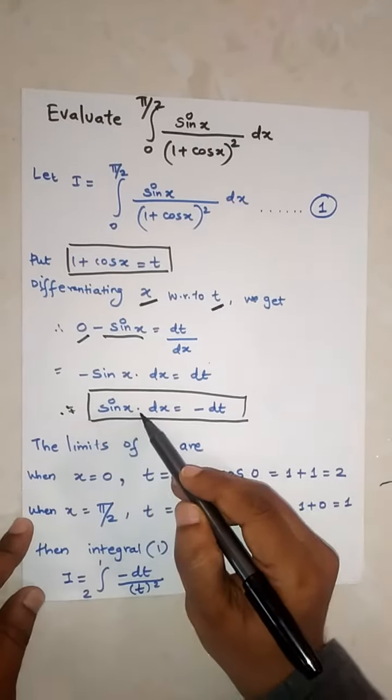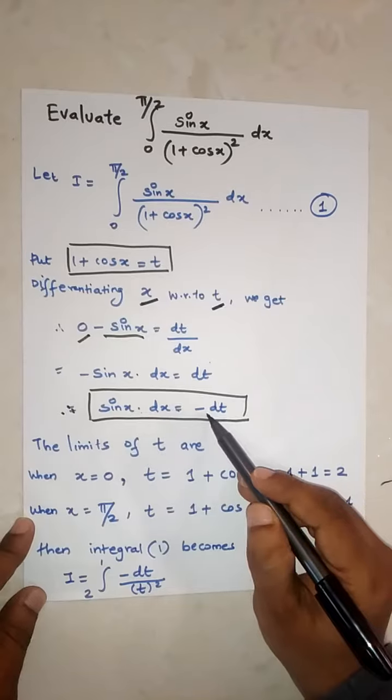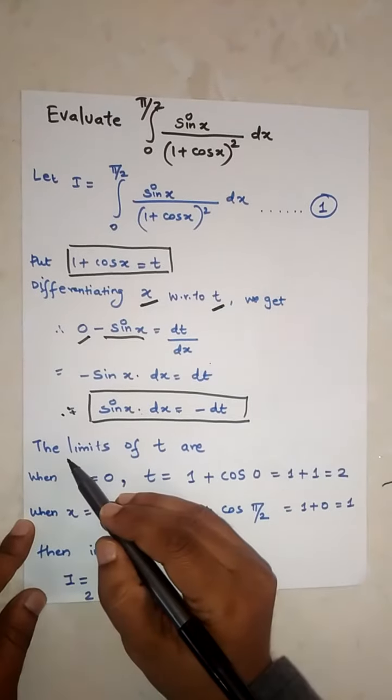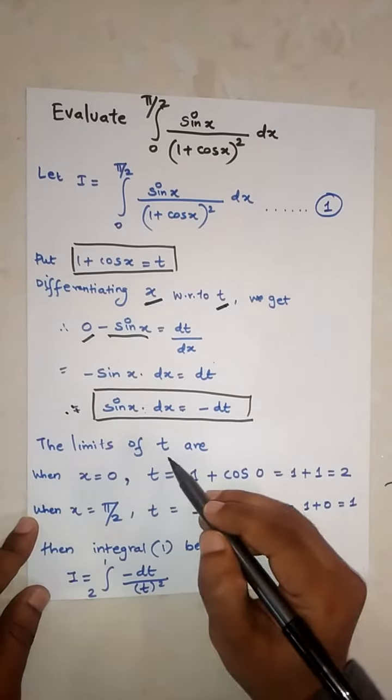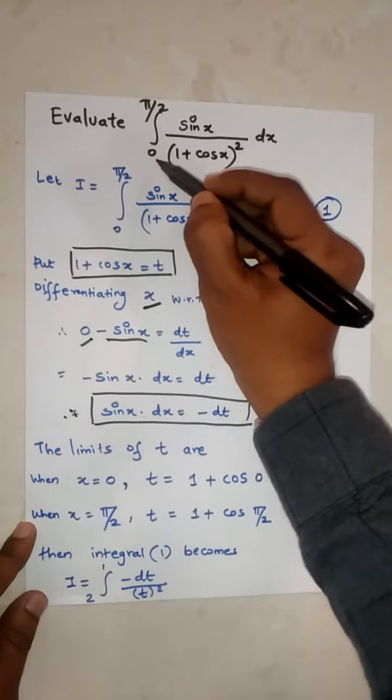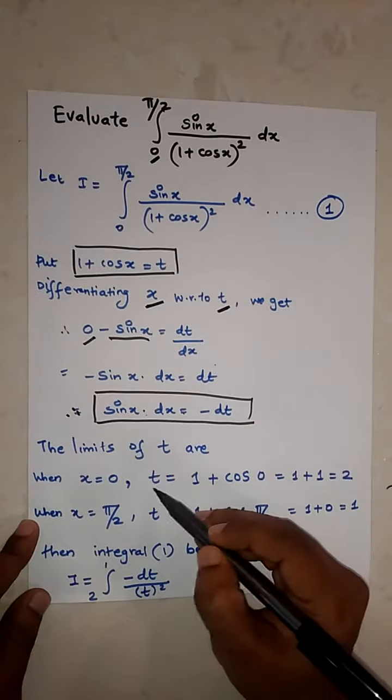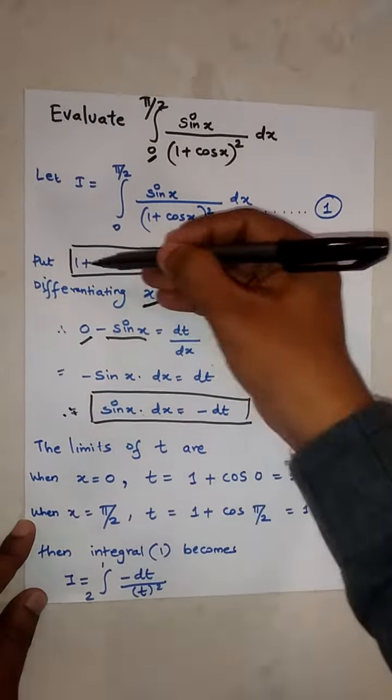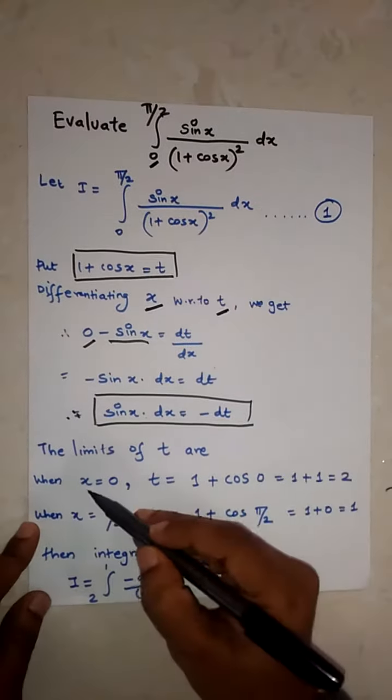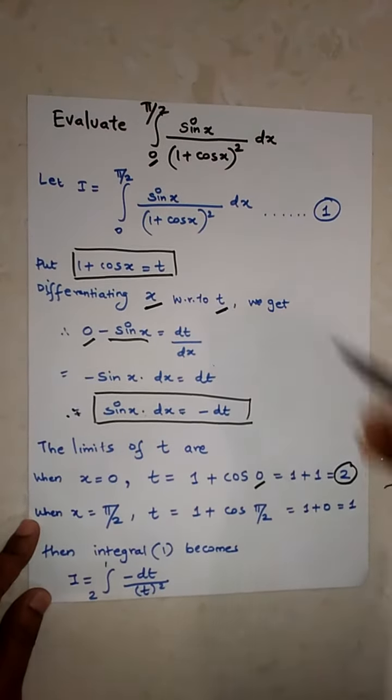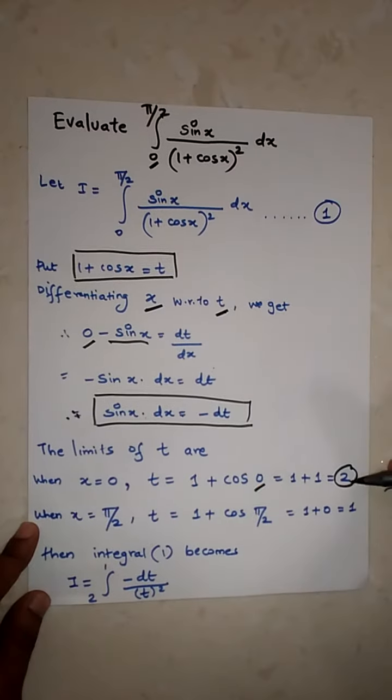First, the limits of t. When x equals 0, t equals 1 plus the cosine of 0, which equals 1 plus 1, which equals 2. So instead of 0, we will write 2.